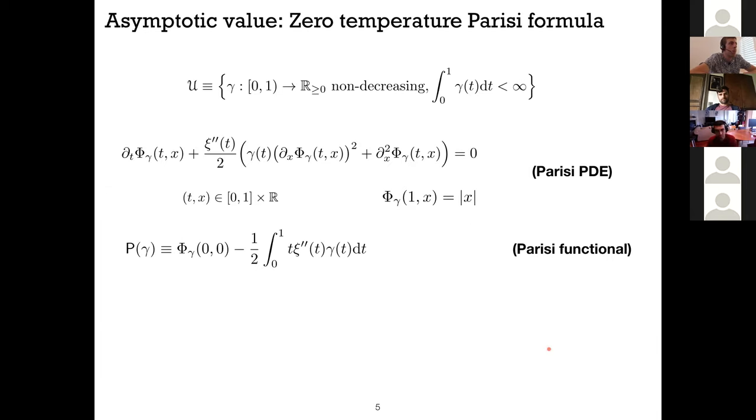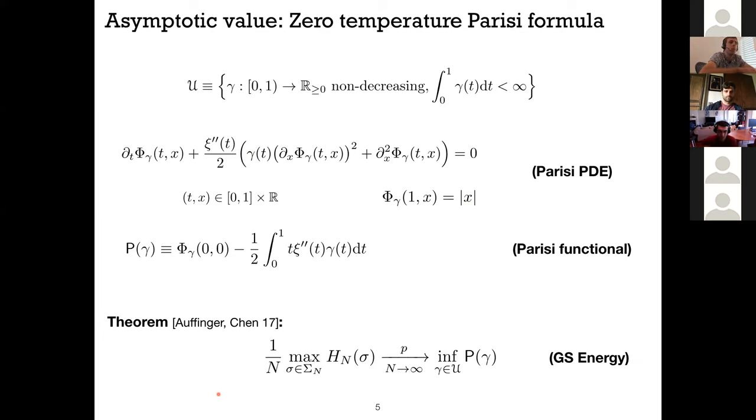Okay, so let me dive into a little bit of the technicalities of the problem. If you want to optimize something, you'd better know what you're looking for. So what is the ground state energy that you're trying to achieve? This is called the Parisi formula or the zero temperature Parisi formula. So we can try to define it. You have to consider first a space U of functions gamma that are non-decreasing, and in the definition you have to consider this non-linear PDE that is called the Parisi PDE. It takes any gamma from the space, puts it here, and then solves this non-linear PDE backwards from this terminal condition. Now once you solve this function phi, you put it in this functional P of gamma. P of gamma takes the value of phi at zero zero and then subtracts this linear term.